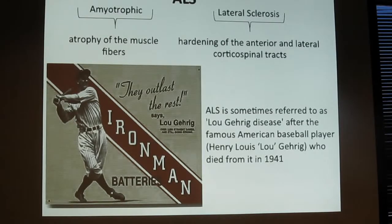It has progressive motor neuron death. ALS is amyotrophic, meaning atrophy of the muscle fibers, and lateral sclerosis, meaning hardening of the anterior and lateral corticospinal tracts. ALS is sometimes referred to as Lou Gehrig disease after the famous American baseball player who died from it in 1941.